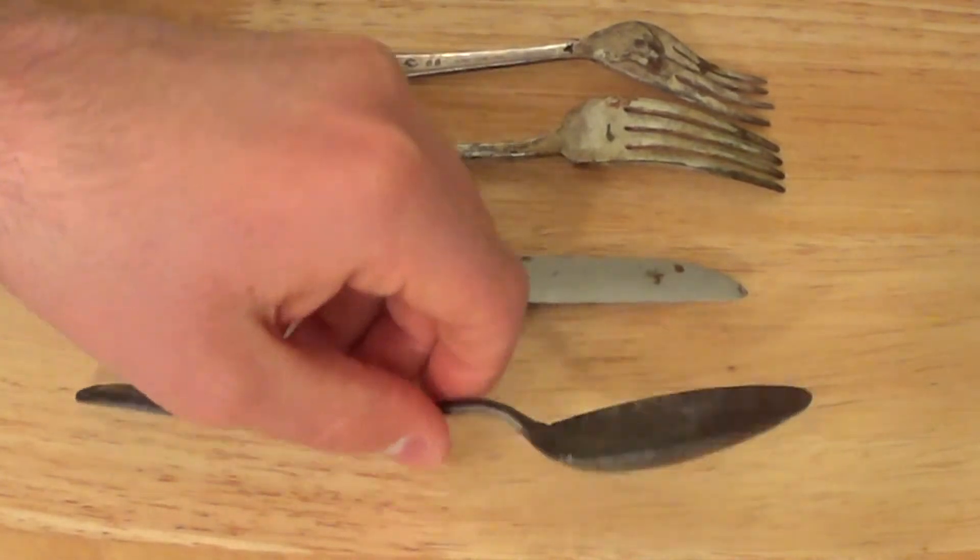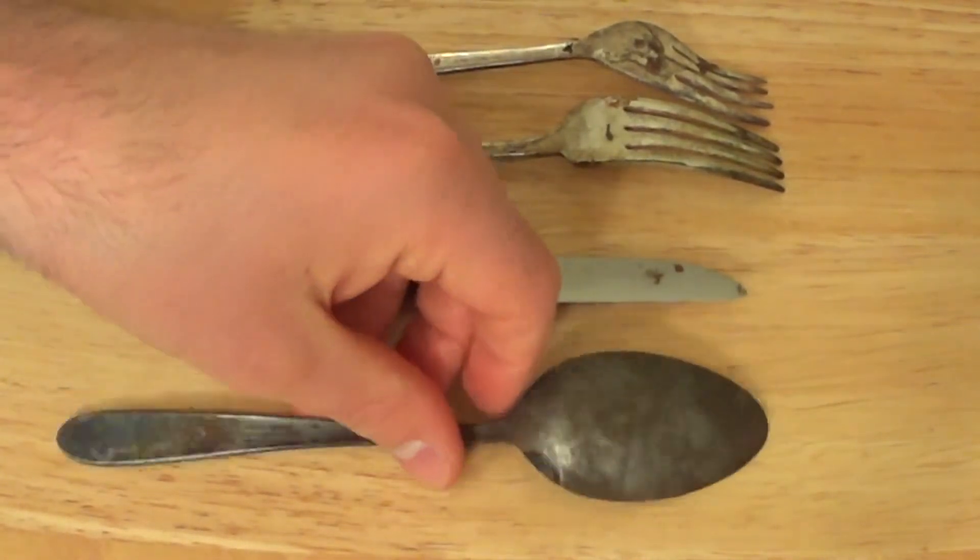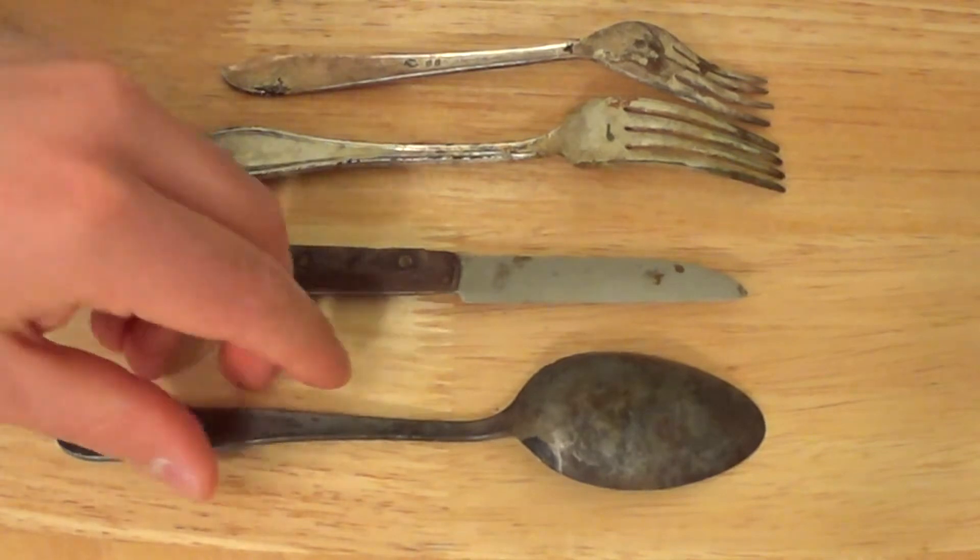This little paring knife and this spoon which claims to be made of stainless steel and was made in Japan.